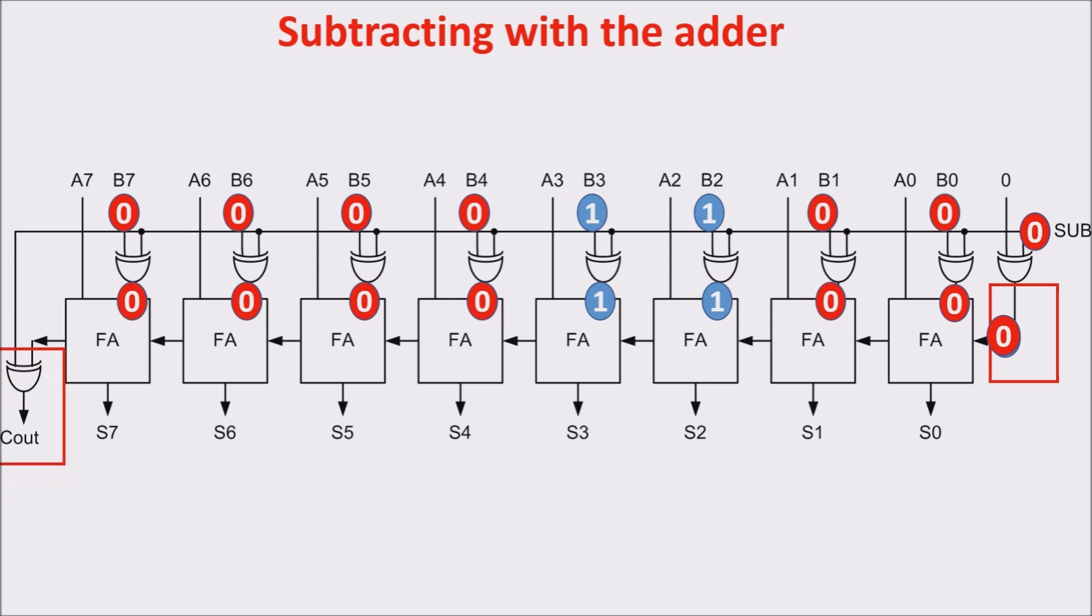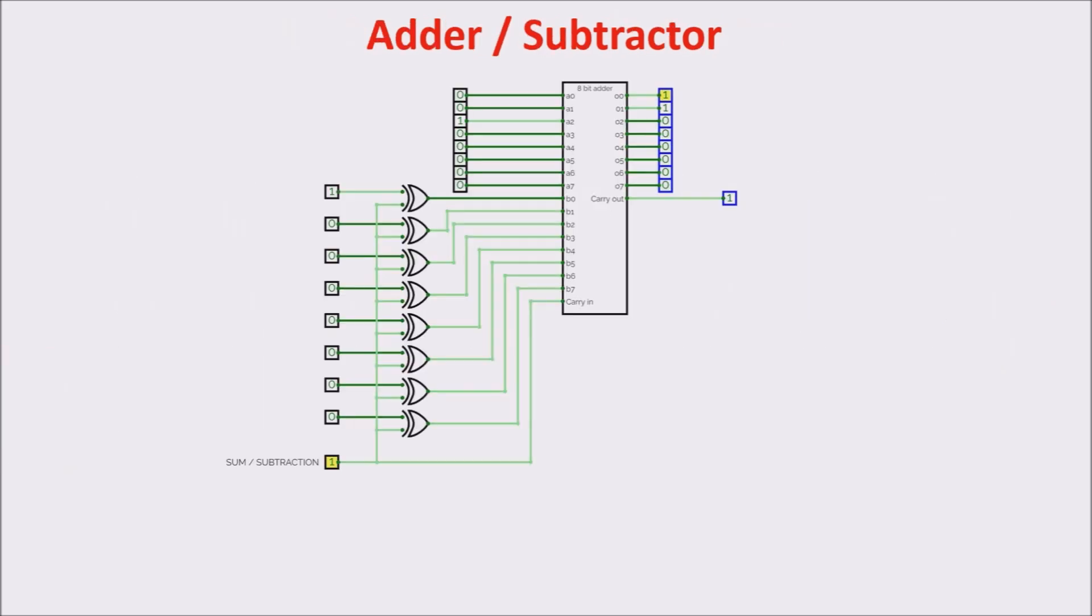Note that if we put SUB line to 0, the XOR doesn't change the bit of the other input, and the carry-in is 0, so the configuration performs an addition this time. Finally, note that this XOR puts the carryout to 0 in case of subtraction, where the carryout is always at 1, but we drop it, and it is transparent for the carryout of the other in case of addition, where the carry is meaningful.